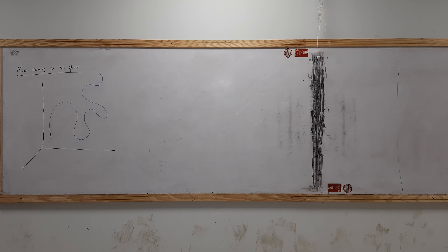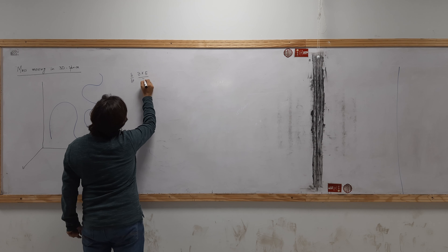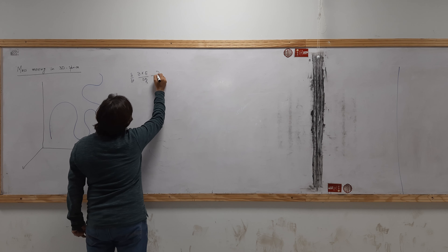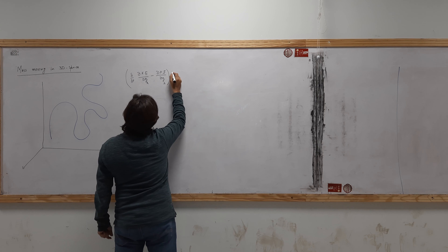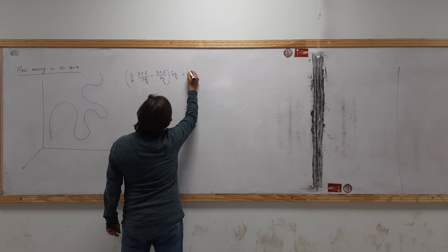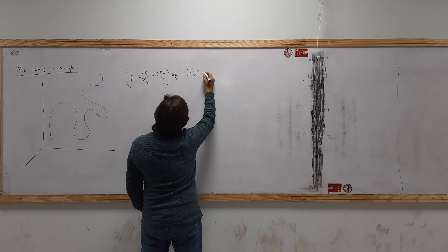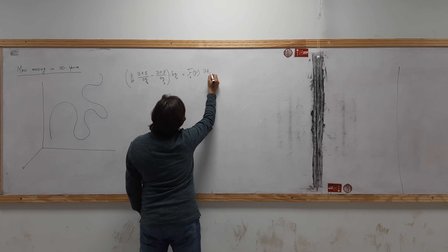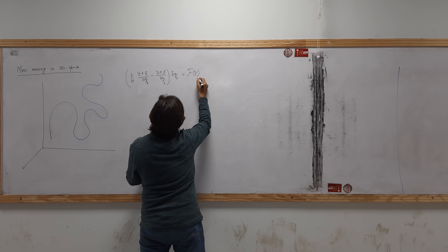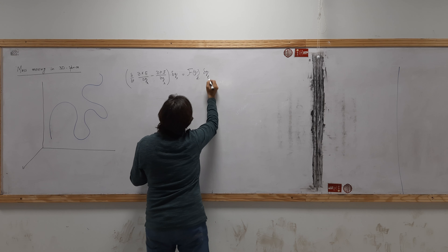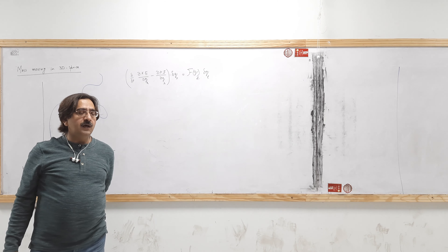What is the Euler-Lagrangian equation in the form of kinetic energy? We will use this equation. The Euler-Lagrangian equation — actually, I must convert it into the Lagrangian form. I must not use the kinetic energy alone, but this course is about undergraduate classical mechanics.